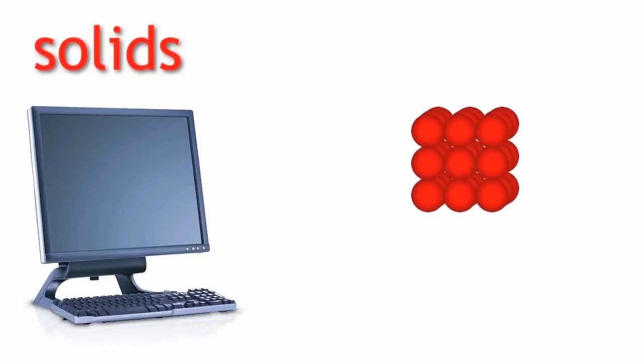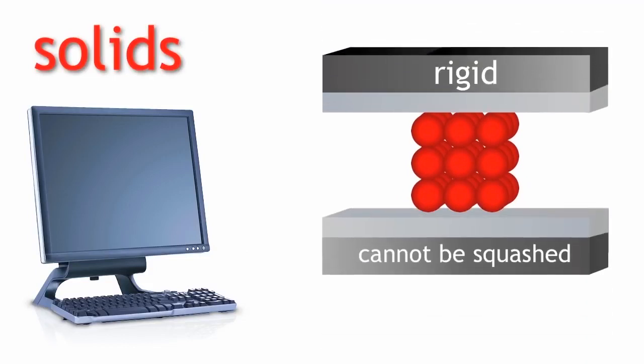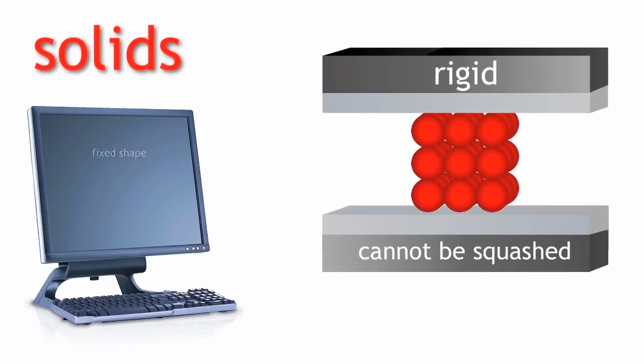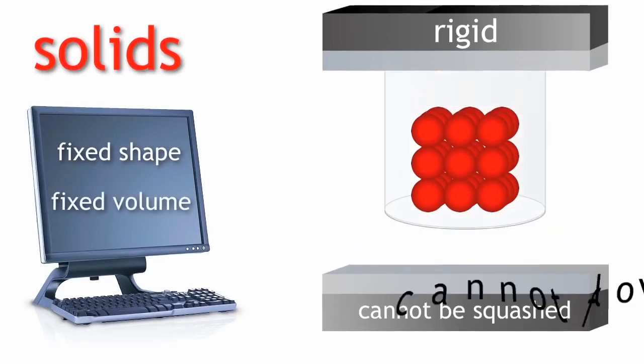So, solids are rigid, cannot be squashed or compressed, have a fixed shape and a fixed volume. They cannot flow.